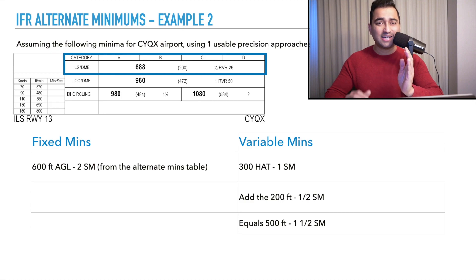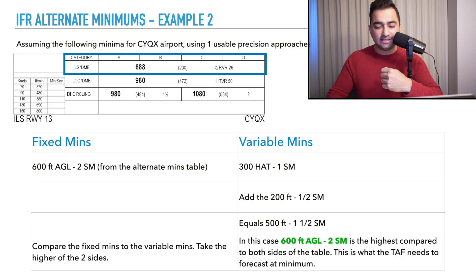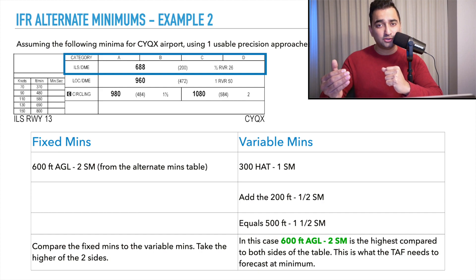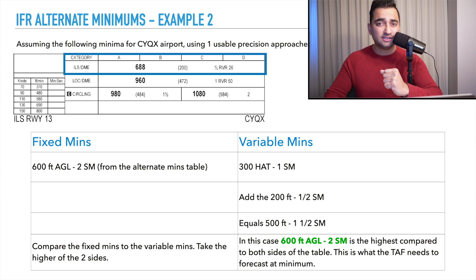We now compare both sides to determine which is higher. In this case, 600 feet AGL and two statute miles is the highest. When looking at the TAF — your terminal aerodrome forecast — to determine whether to use the airport as an alternate, this is the minimum visibility and ceiling it must show to use it as a legal alternate. Because the result is 600 feet and two statute miles, we're legally allowed to use the sliding scale.